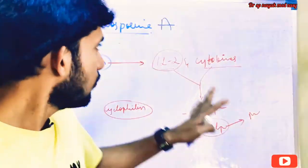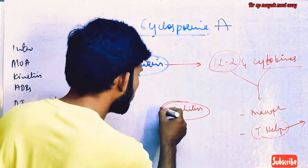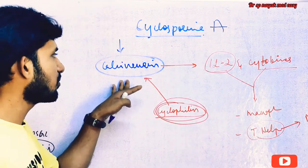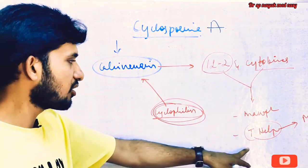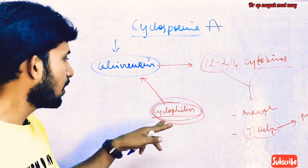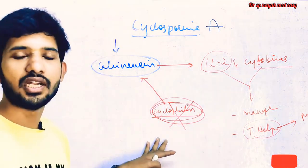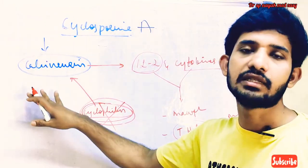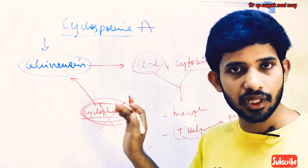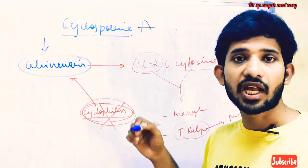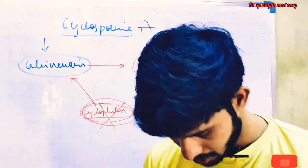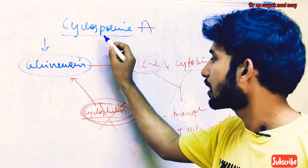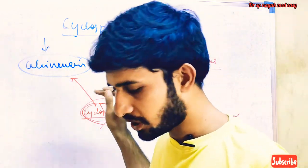Cyclosporine binds to an intracellular protein compound called cyclophilin. Cyclophilin is very important in the activation or formation of calcineurin, which is important in the formation of macrophages and T helper cells through IL-2 and cytokines. Cyclosporine goes and binds to cyclophilin, and by binding it will stop or inhibit the formation of calcineurin — that is why cyclosporine is called a calcineurin inhibitor. Tacrolimus is another example of a calcineurin inhibitor.